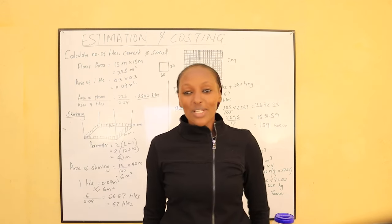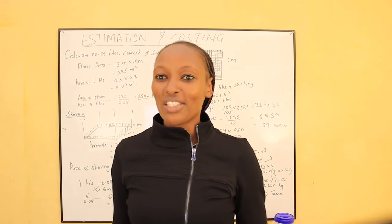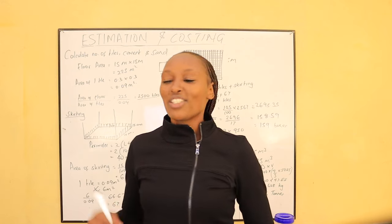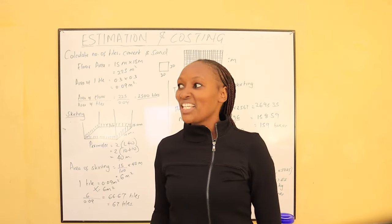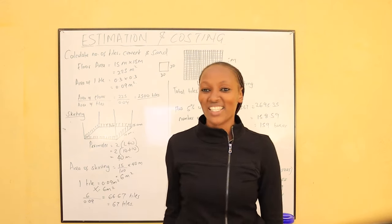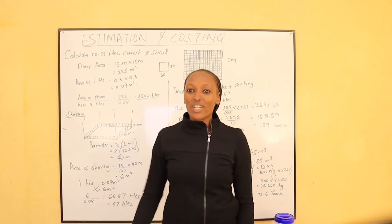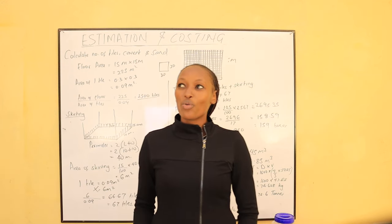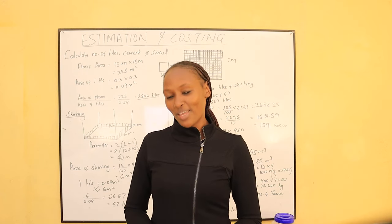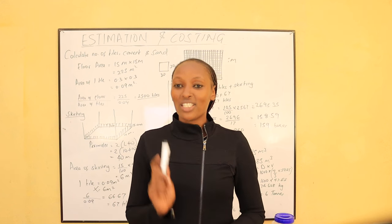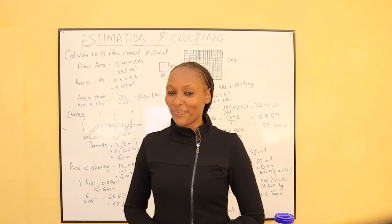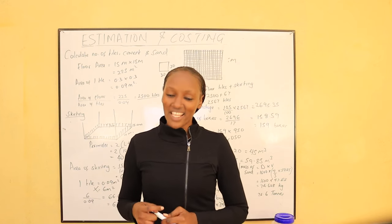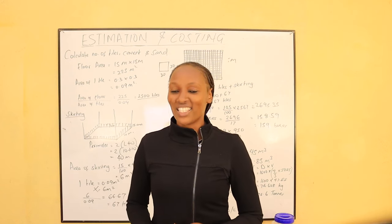We have been looking at a new series where we have been calculating the quantity of materials required to do different types of work in a building project. We started by calculating the quantity of materials for plastering walls, then we did the quantity and cost of materials needed for concreting — for example, when doing a slab, beam, or column — calculating bags of cement, quantity of sand, and number of lorries of ballast. If you haven't seen those videos, check the description box and the playlist on calculation of quantity of materials.